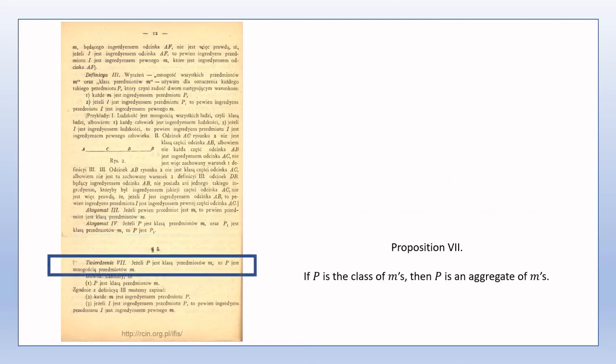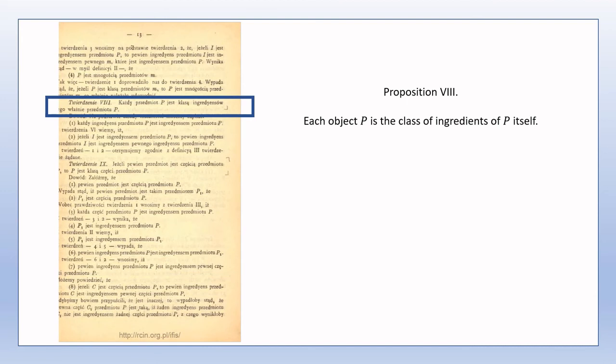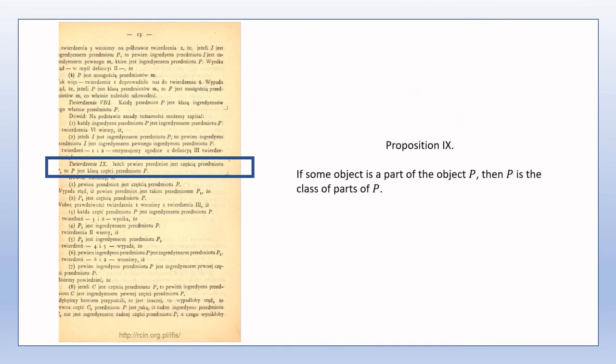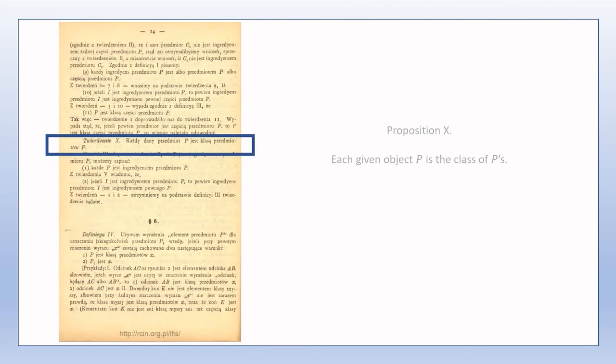Section 5: some short remarks concerning the propositions from Section 5 are as follows. In Proposition 8, we have that P can unconditionally be considered as the class of its ingredients. However, for Proposition 9, we have the condition that if some object is a part of P, then P can be considered as the class of its parts. Note that we cannot guarantee the existence of a part of an object. An object will always have an ingredient — namely itself — but may not have any parts.